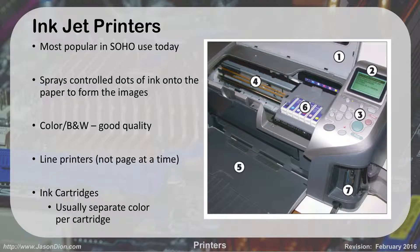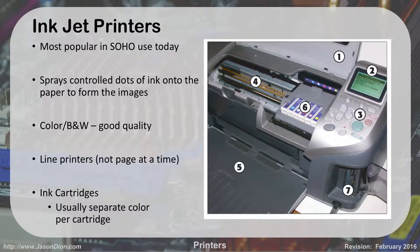The way inkjet works: it gets data in through USB generally, the page is picked up, and the cartridge goes back and forth across the page printing as it goes with those dots. It actually heats up the ink inside the cartridges to the point where it's boiling, then opens up a little nozzle that sprays out tiny dots onto the paper. The first inkjets were actually called bubble jet — made by Canon — because they bubbled up the ink onto the page.